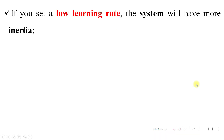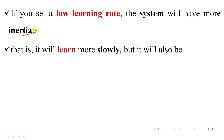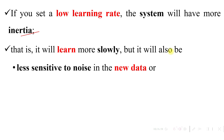If you set a low learning rate, the system will have more inertia — it will learn more slowly, but it will also be less sensitive to noise in the new data.